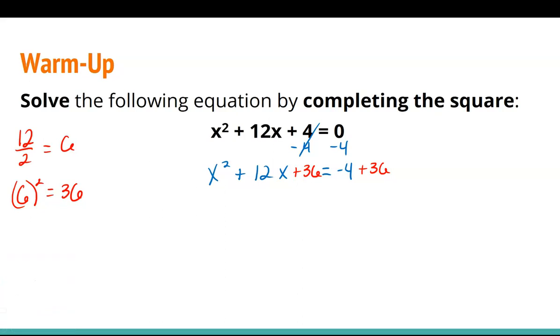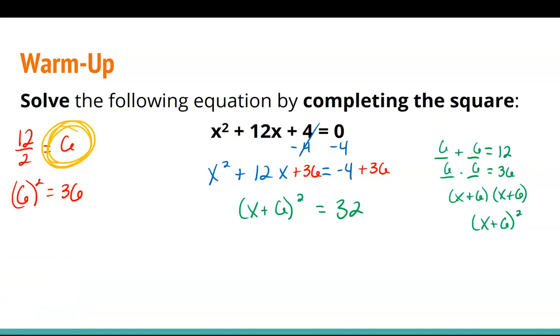Next, we are going to factor, so thinking of two numbers that add to equal 12 and multiply to equal 36 would be a positive 6 and a positive 6. So we can either write that as x plus 6 times x plus 6, but we would rather write this as x plus 6 squared. And then simplifying the right side, negative 4 plus 36 is 32. The shortcut to that last step with the parentheses squared is whatever number you got from halving b, this will always be the number that goes inside here.